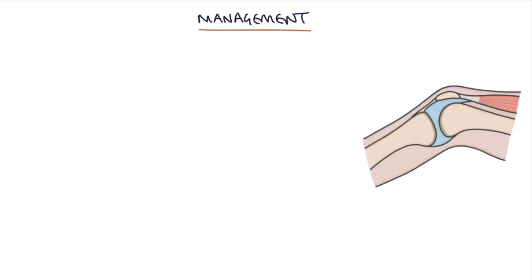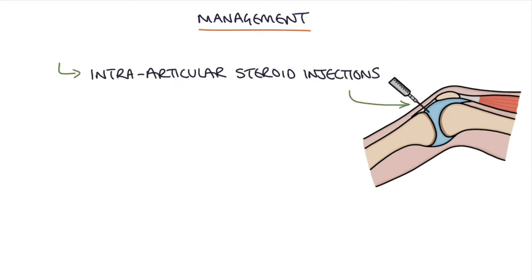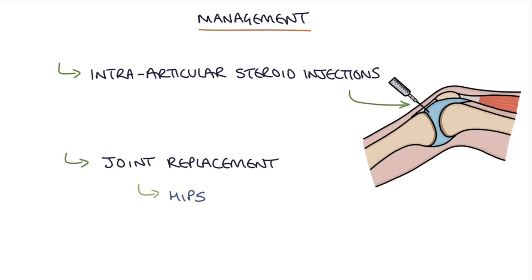The two final management options are intra-articular steroid injections, which can provide a temporary reduction in inflammation and improve symptoms, and joint replacement, which can be used in severe cases. The hips and knees are the most commonly replaced joints.